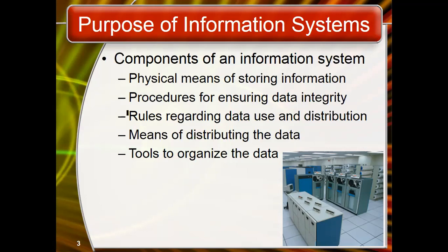There are several categories of software, with the two main categories being operating system software — which makes the hardware usable — and application software, which does something useful. Information systems use software to run various processes, store data in the database, integrate the data, collect the data, process the data, and organize the data. All these things are managed through different types of software.